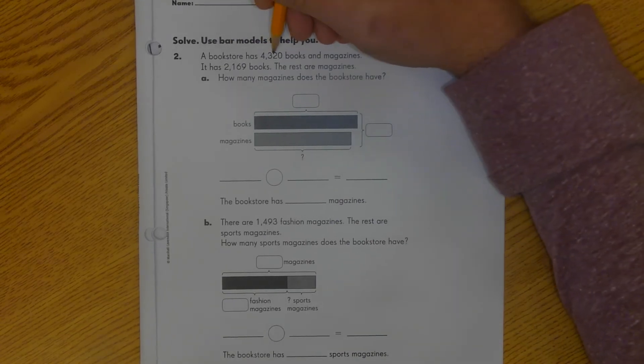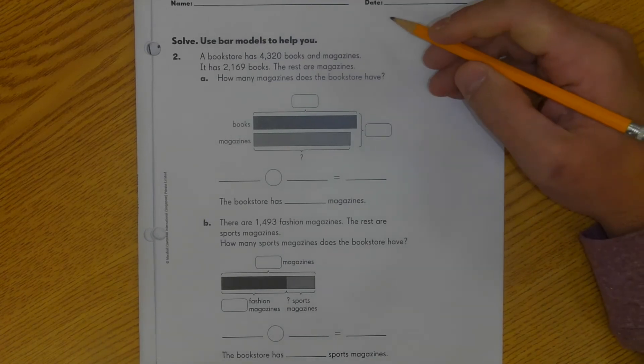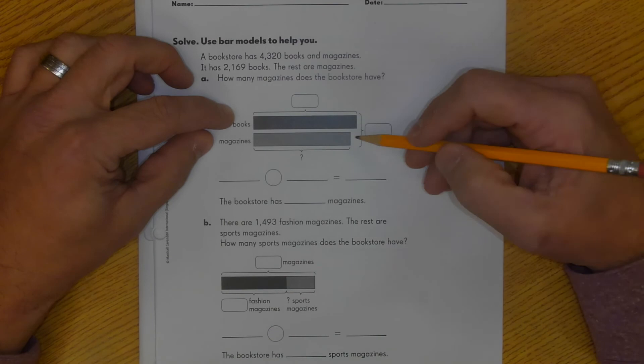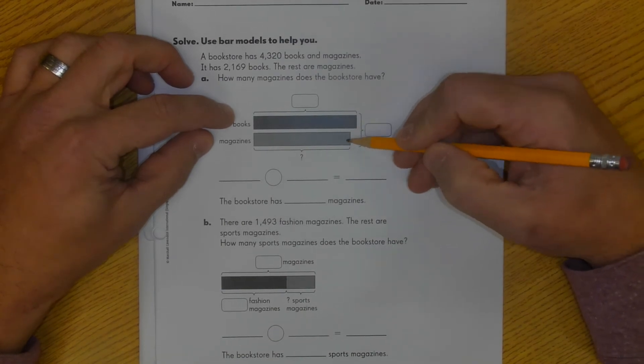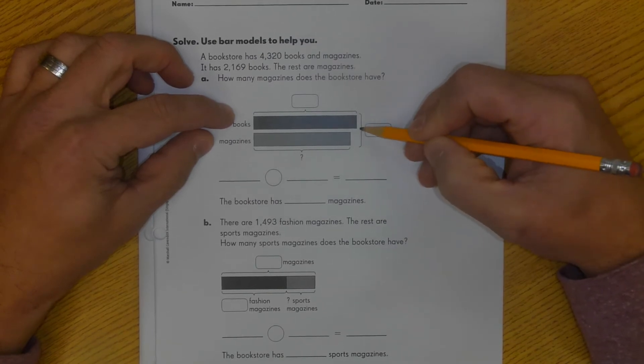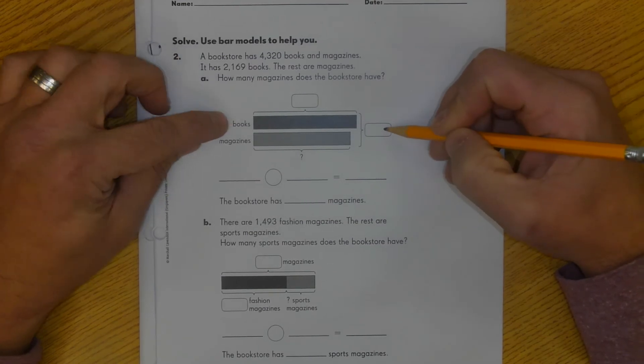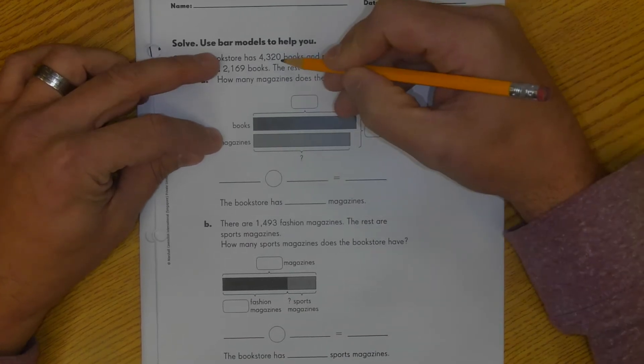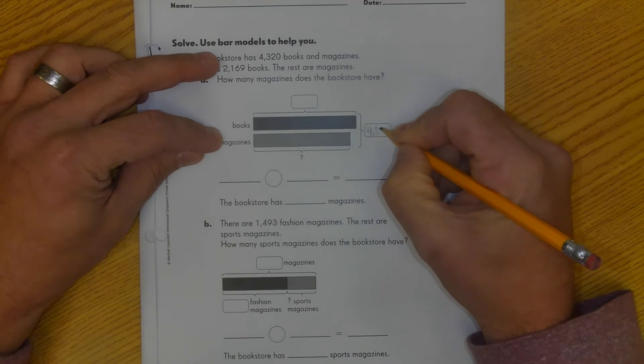I'm going to do that just by taking apart the problem and looking at it piece by piece and focusing on the numbers. A bookstore has 4,320 books and magazines. So when I look at my bar model, I can see that books and magazines are stacked on top of each other. So I'm using a comparison model because they're on top of each other. And then I know that if I take this bar and put this bar together, that's going to be my total. And I know that's the total of books and magazines. So this number, 4,320, should go in this box.